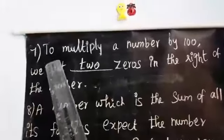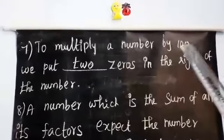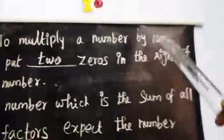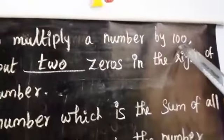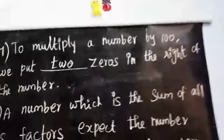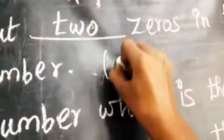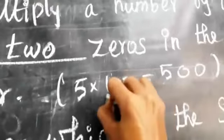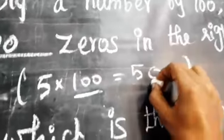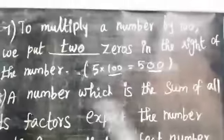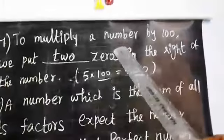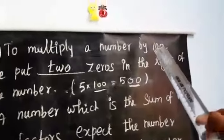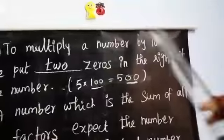Look at the seventh one: to multiply a number by 100, we put two zeros on the right of the number. For example, 5 × 100 = 500 — we add two zeros. Also note: multiplying by 10 means adding one zero, and multiplying by 1000 means adding three zeros.